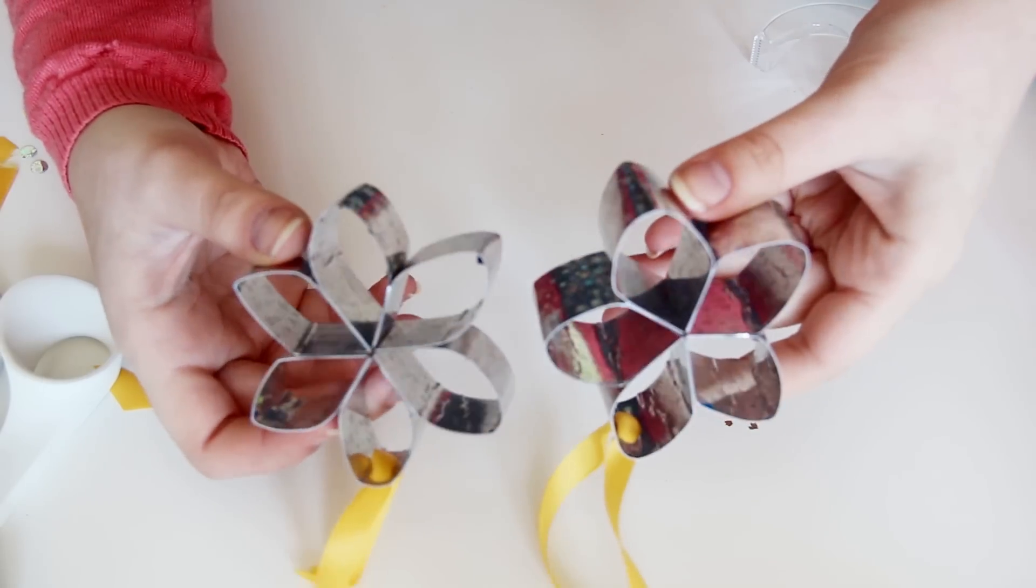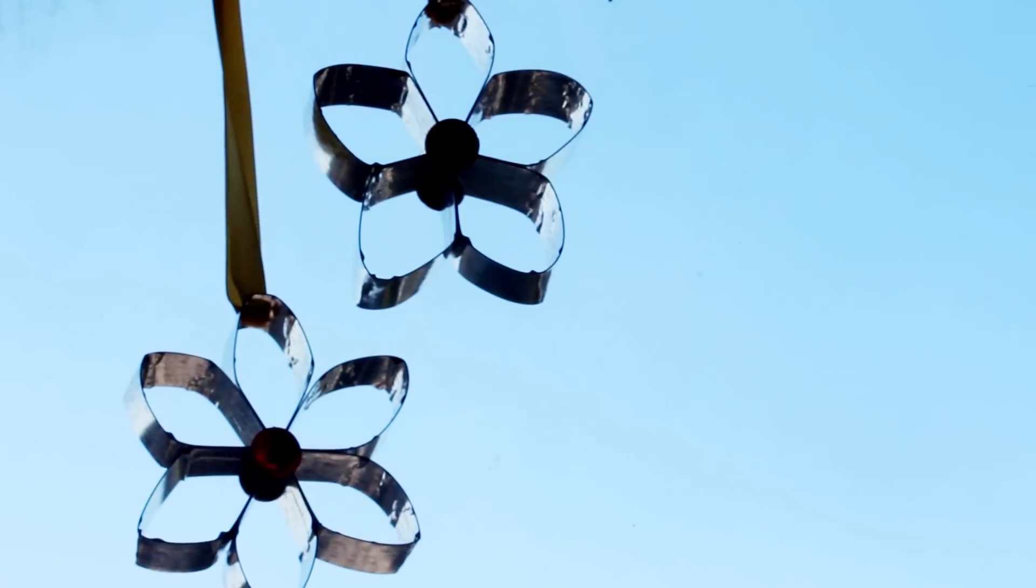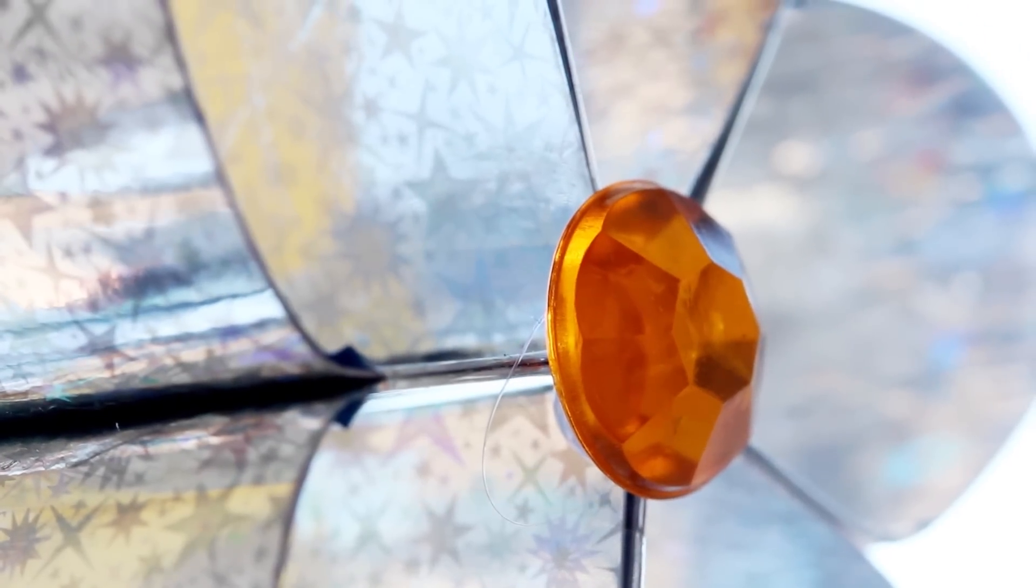So there you go. You can make these flowers with five or six petals and you can make the ribbon as long or as short as you like. And then just hang them up in your window, in your locker, anywhere that you want. I think they came out super cute. I would love to see your take on how you make them.